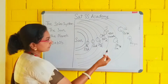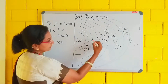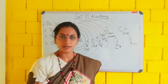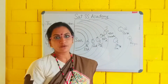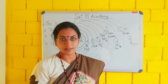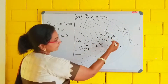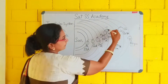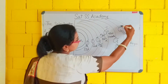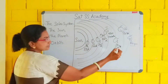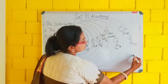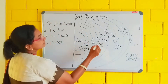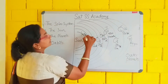We have to check these 4 planets: Mercury, Venus, Earth and Mars. These 4 planets are called inner planets. And Jupiter, Saturn, Uranus and Neptune — these 4 planets are known as outer planets.